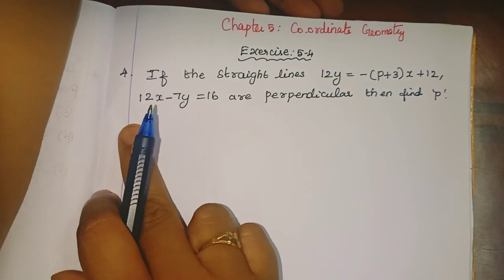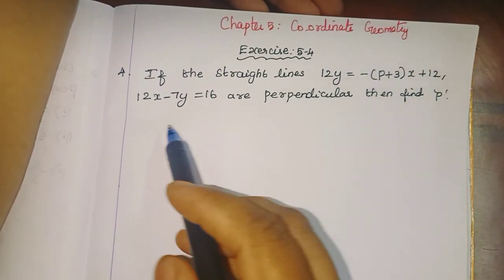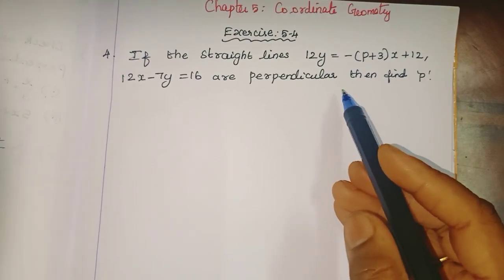If the straight lines 12y = -(p+3)x + 12 and 12x - 7y = 16 are perpendicular, then find p.